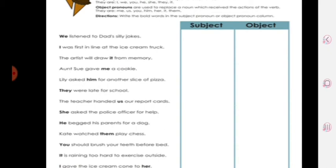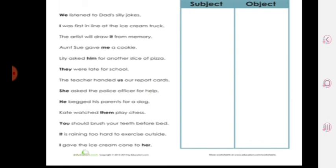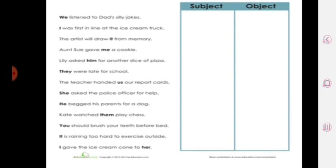Next is Kate watched them play chess. 'Watched' is the action word, and after that it is 'them,' so 'them' is an object pronoun.